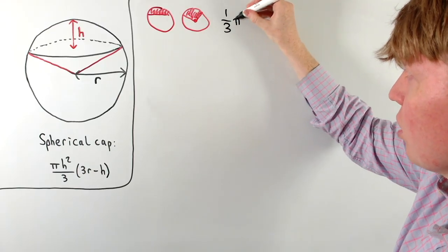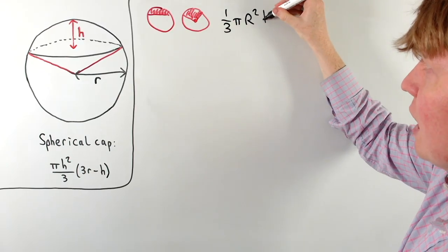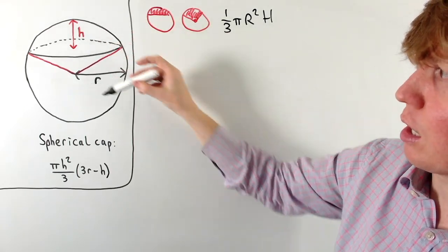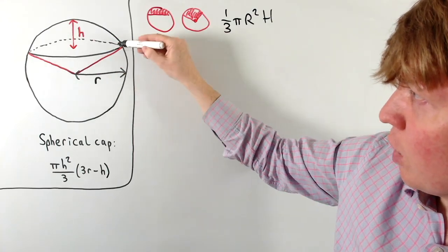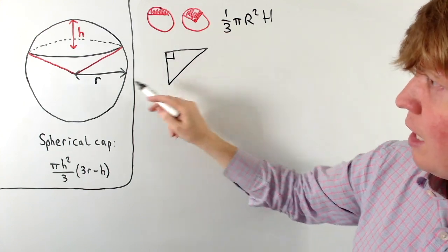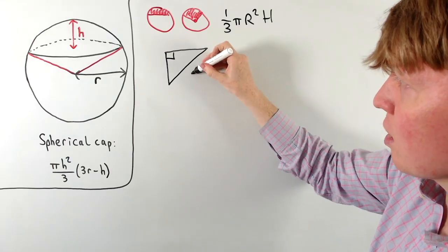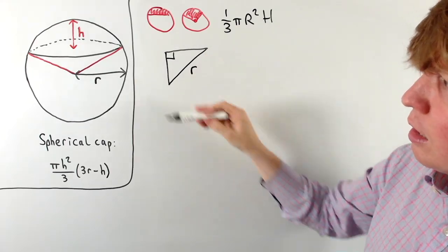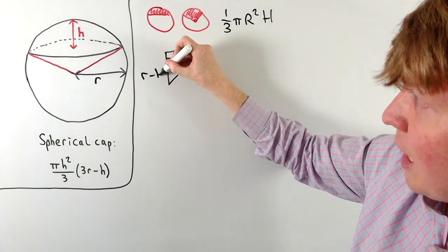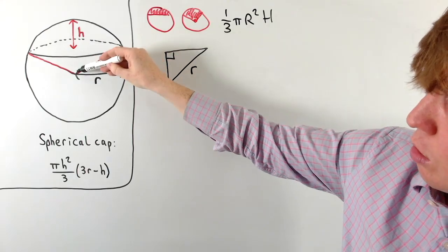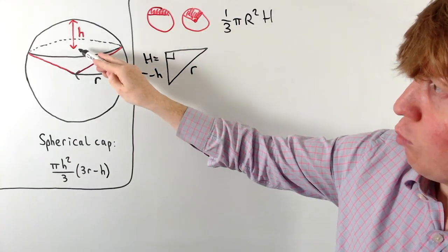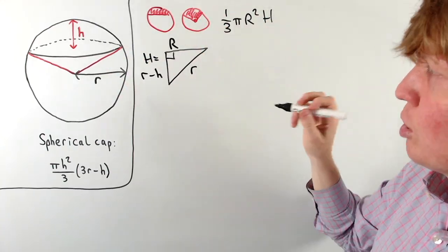The volume of a cone is (1/3)π R² H. On our picture, the radius R is the radius of the circular base and the height H is the slant side. Drawing out the right-angled triangle: one side from the sphere's centre to the outside has length r; the other side from centre up to the top of the cap has length r − h, which equals our capital H.